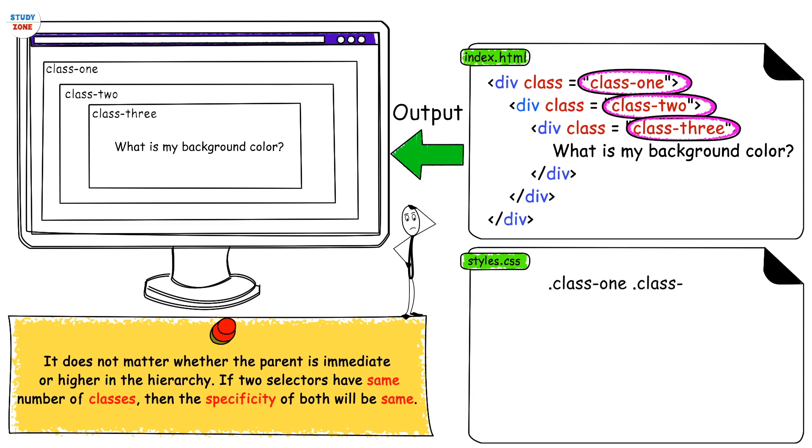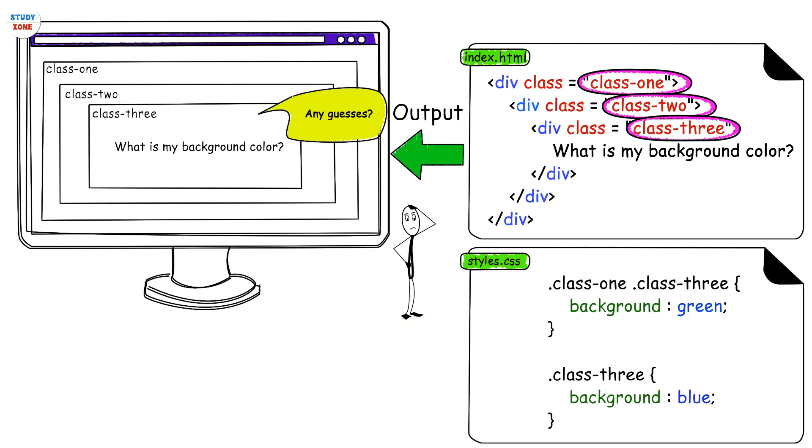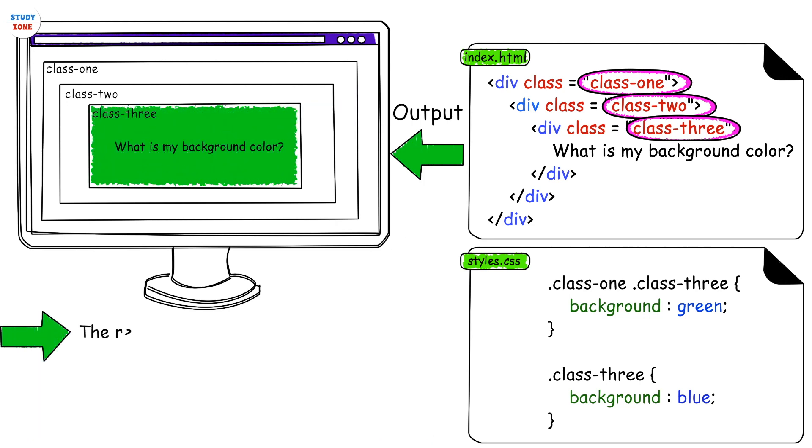Confused? Hang on for a minute. Let's have another example: .class-one .class-three background green, and the next one is .class-three background blue. Any guesses what will be the background color of class-three element which is inside class-one parent? It will be green.